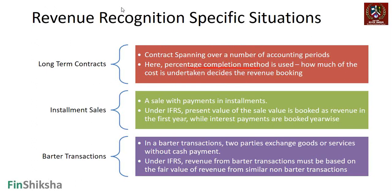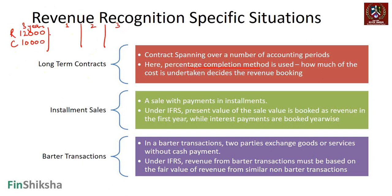How much cost has been undertaken determines the revenue booking. For the L&T airport example, assume revenue is 12,000 crore and total cost is 10,000 crore over three years. One answer is to book revenue only when cash is received — but that's incorrect under accrual accounting. Dividing equally over three years is also problematic, because the bulk of work might be completed in year two while testing takes year three, penalizing the firm unnecessarily.